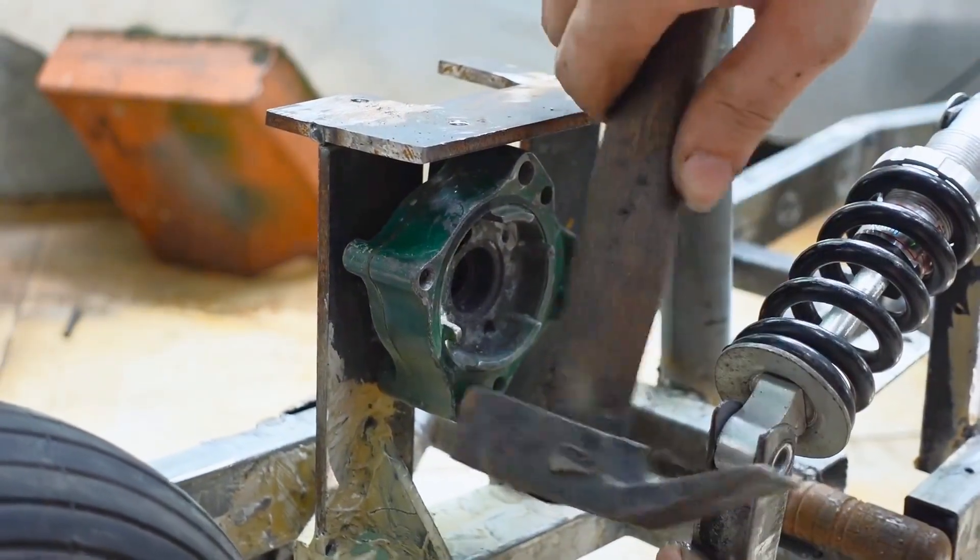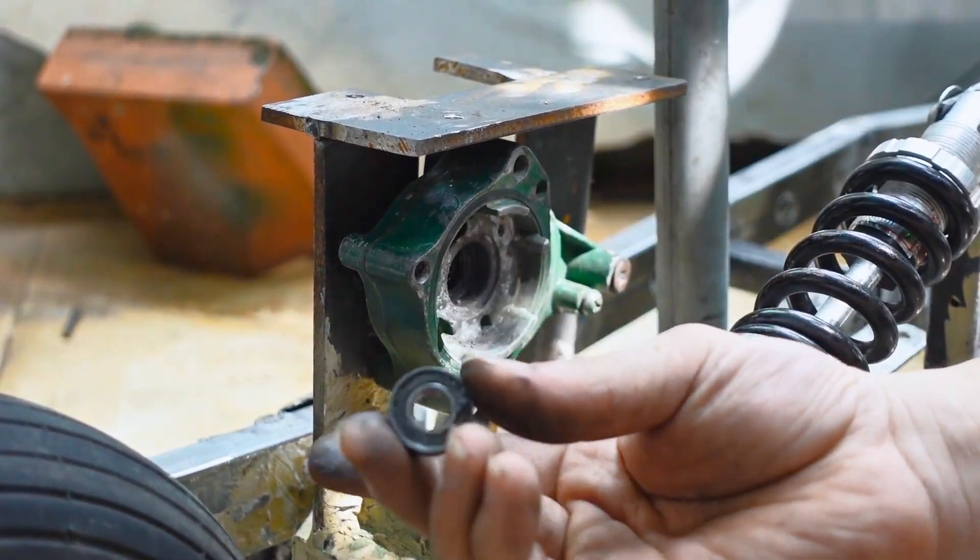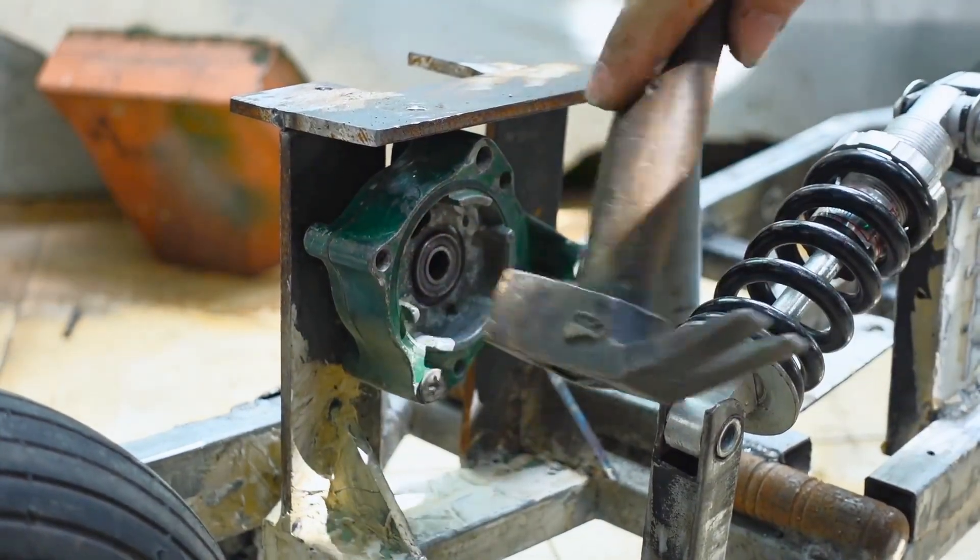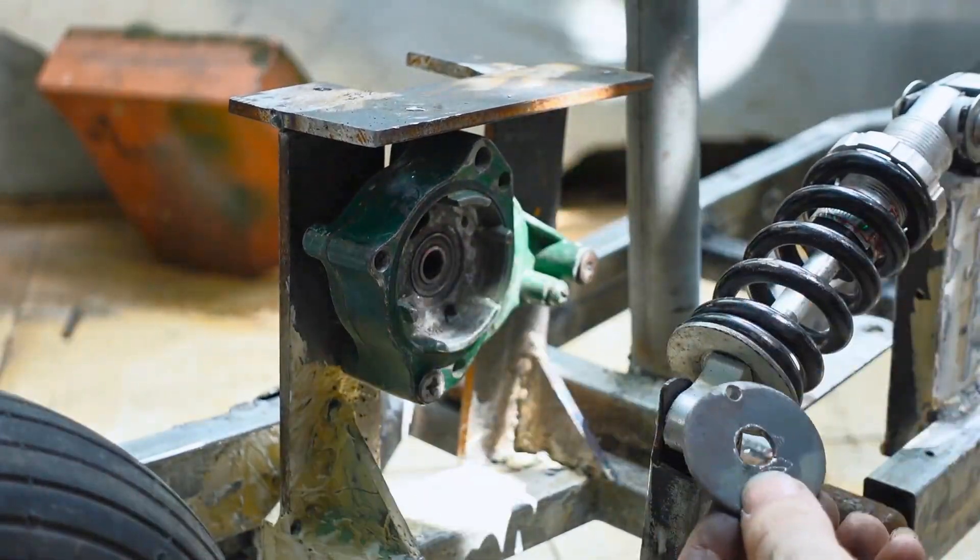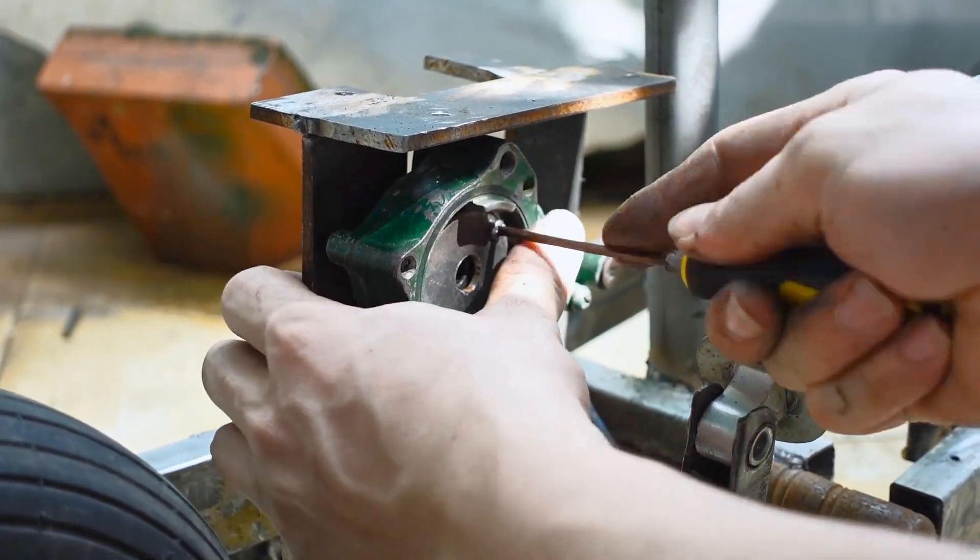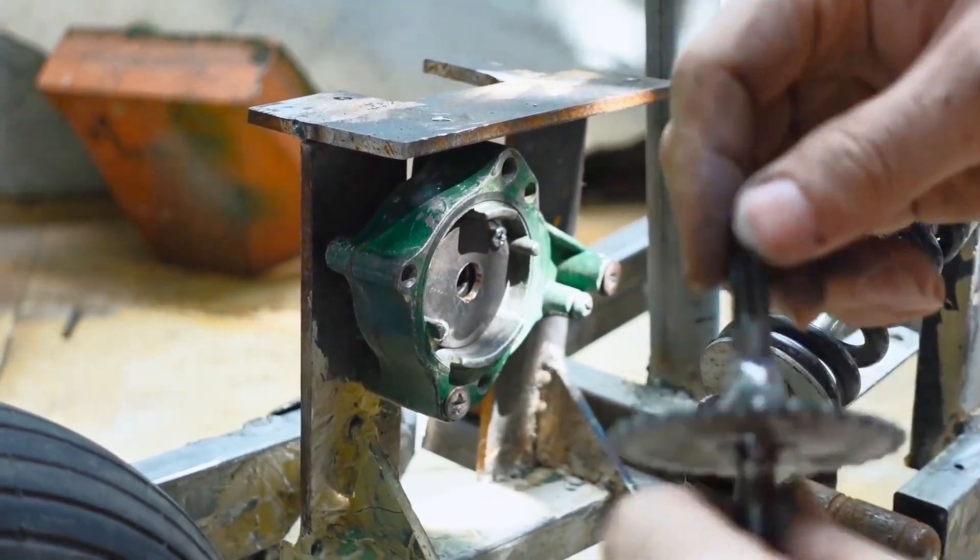When I set out to design a chain drive system for my scrap metal car, I needed two things: speed reduction and torque multiplication. Since I was working with salvaged parts, I had to get creative, but the physics remained the same. Understanding the basics: speed reduction and torque increase.